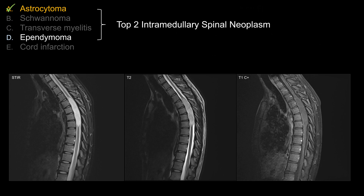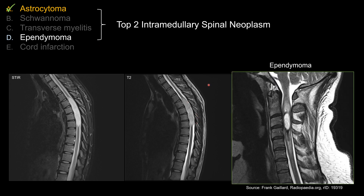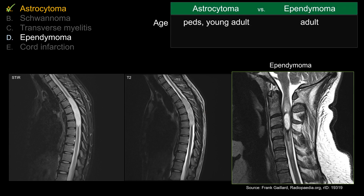Let's talk about other choices that do not work as well. First, ependymoma — which in real life should be your top two differential diagnosis for intramedullary cord neoplasm. This is a nice example from Radiopaedia, a great resource for radiology. Between those two, there are some distinguishing features that could be helpful for making the differential diagnosis, both in real life and on board exam.